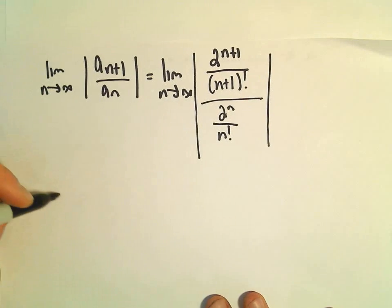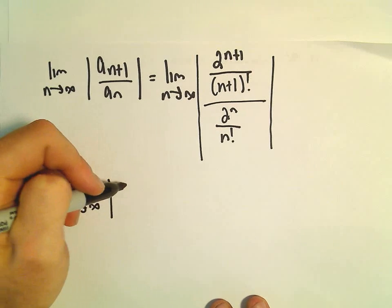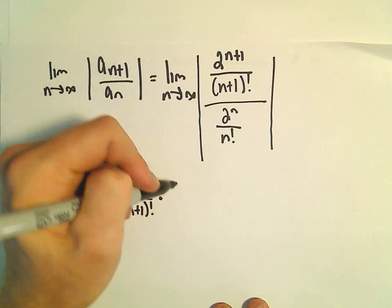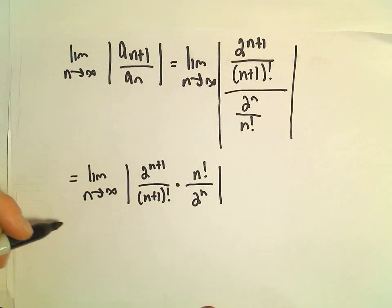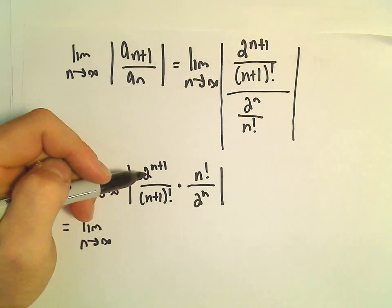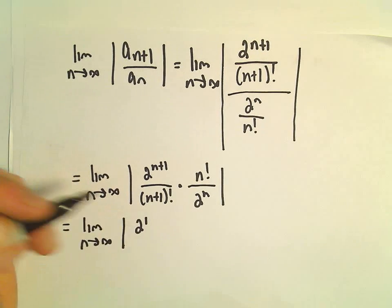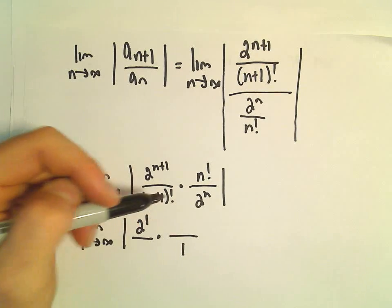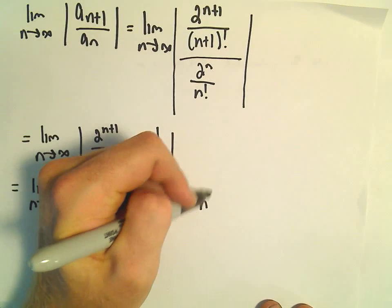This is the limit as n goes to infinity of 2^{n+1}/(n+1)! times n!/2^n. We can simplify this. We've got 2^{n+1}/2^n, which leaves us with 2 in the numerator. And then n!/(n+1)!. How does that simplify?